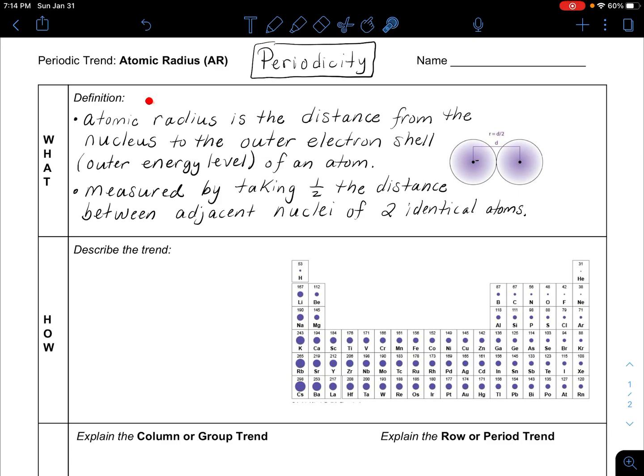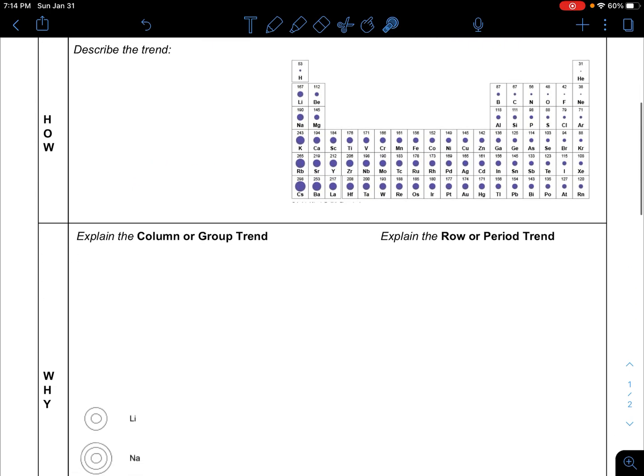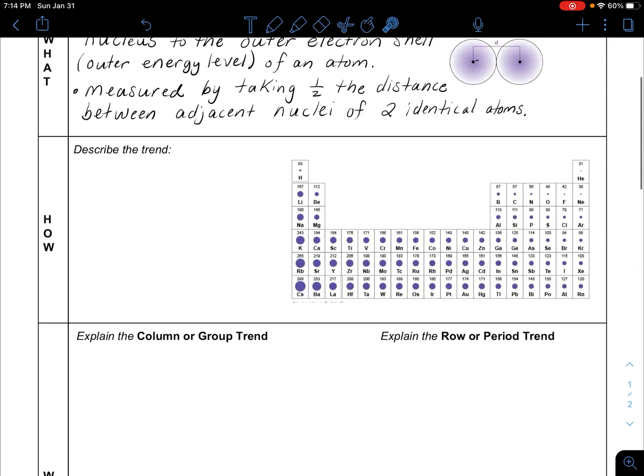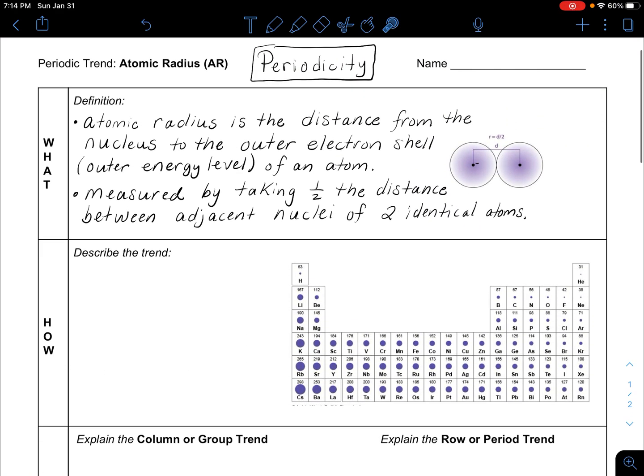What I'm going to do in this video is go through the definition of atomic radius, describe the trend and talk about metals and nonmetals, and explain in detail why that column or group trend exists and also why that trend exists in a row or period.